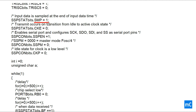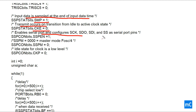Here, the SMP bit of SSPSTAT is set to 1, which means input data is sampled at the end of the data time — as explained in the waveform. CKE is set to 0, which means transmit occurs on the transition from idle to active clock state. SSPEN is set to 1, which enables the serial port and configures SCK, SDO, SDI, and slave select as serial port pins. This is an important configuration that many programmers miss.